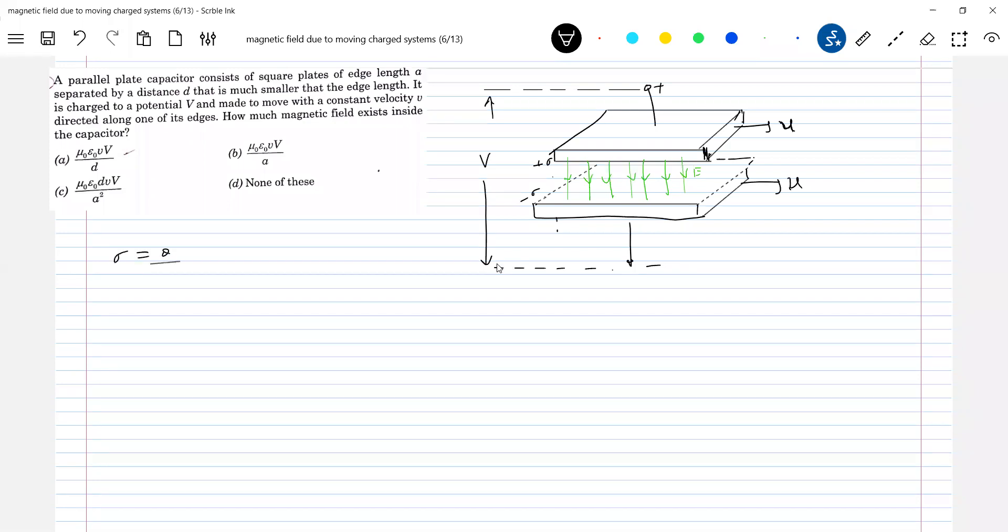Sigma equal to Q by A square, where A is the area of cross-section. Then Q equal to sigma A. So V equal to E into D, the potential difference. Let E be the electric field as shown. E is what? Sigma by ε₀ into D.